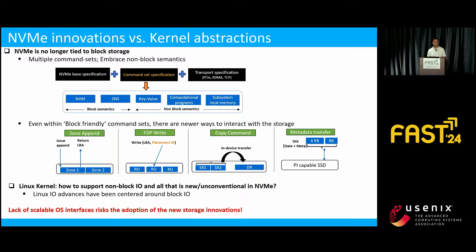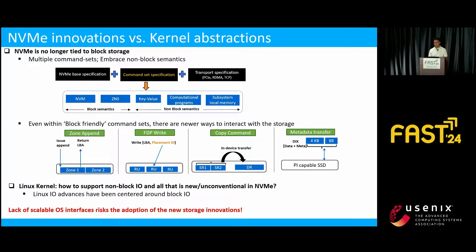If we look at NVMe at the specification level, it's not tied to block storage. Currently, we have multiple command sets with non-block semantics. Even with block-friendly command sets, there are unconventional ways to interact with the storage. With ZonedAppend, the exact location of the write is known only after it has been completed. With FDP, a placement ID needs to be specified along with the write command to do data placement. With the copy command, the interface requires multiple source ranges and a single destination but without any host buffers. And on a DIF-capable SSD, an extra metabuffer needs to be sent for IOs. So the question was: how can the Linux kernel support all that is new and unconventional in NVMe?